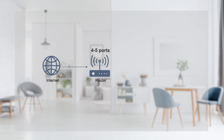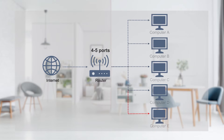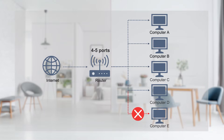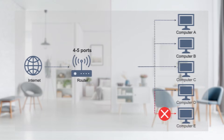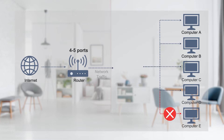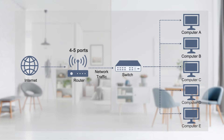A typical router usually has four to five ports for network connections. If you need to connect more devices than the router has ports for, you'll need to buy a switch to increase the number of ports. In a home setup, you typically connect the router to the internet first, and then connect the switch and devices to it for data exchange.